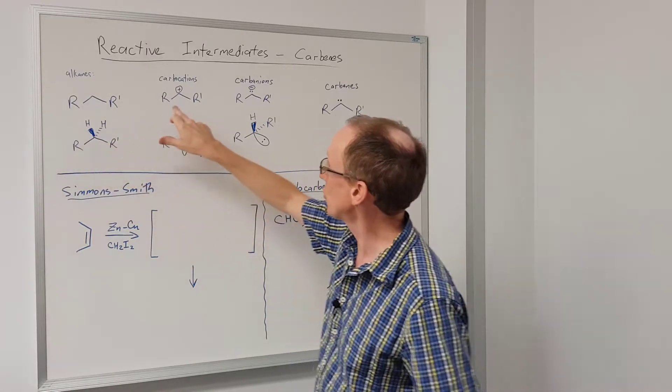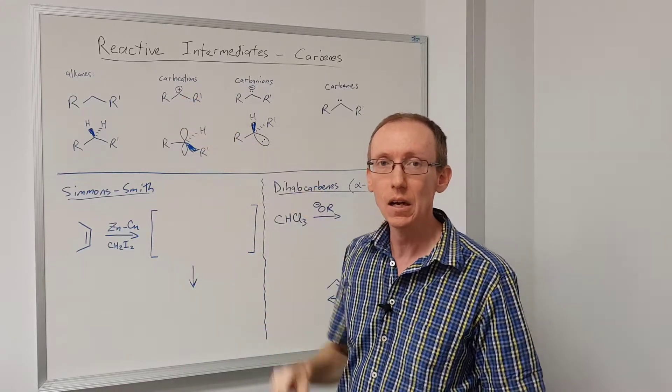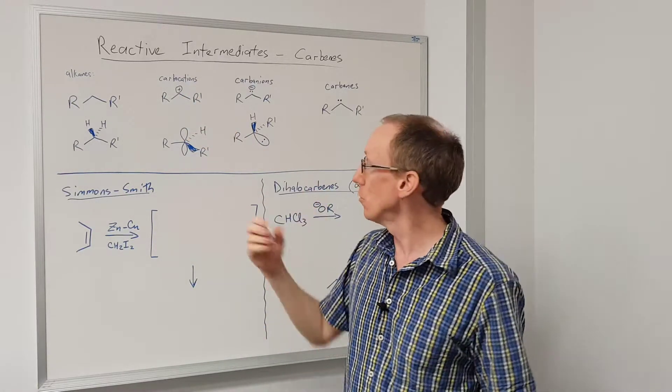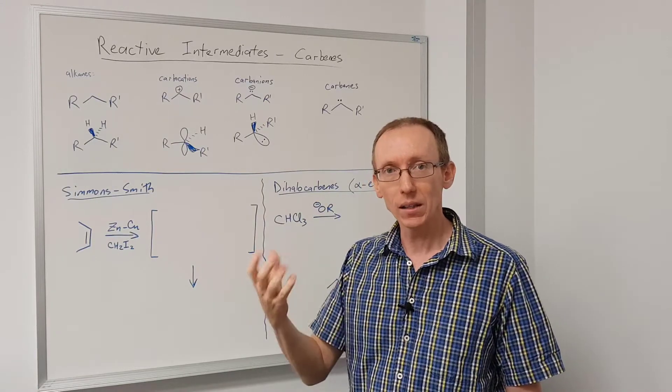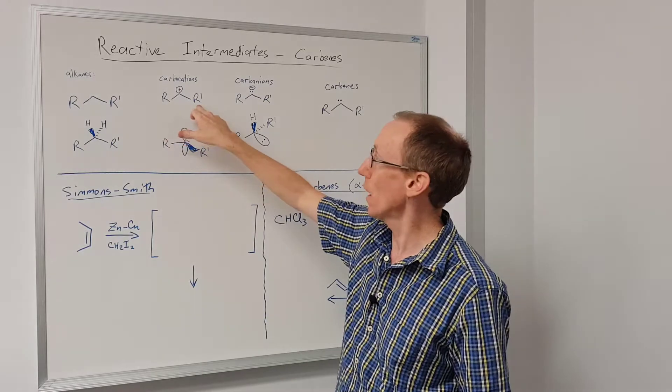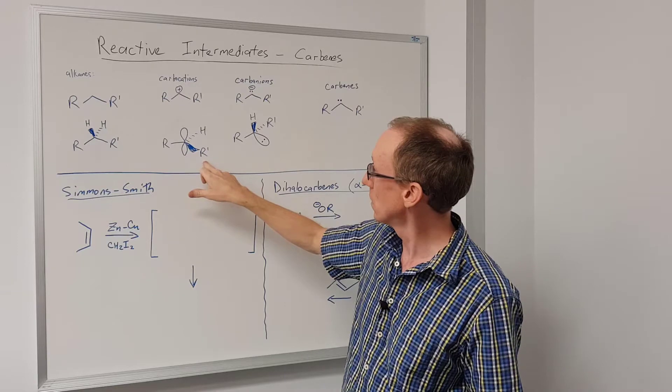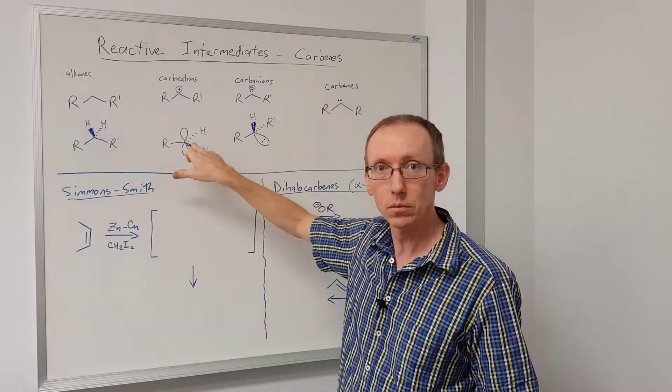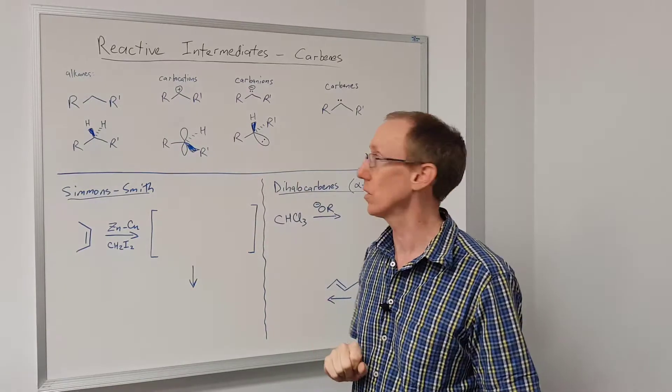Now if we compare that to a carbocation we would normally draw a carbocation like this and then we know because there's a formal positive charge there must be one less thing attached to that carbon. So let's do that - the two R groups has a positive charge so it would look like this: two R groups, an empty p orbital and one hydrogen which is implicit in this structure.